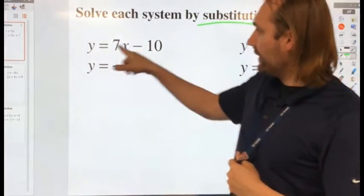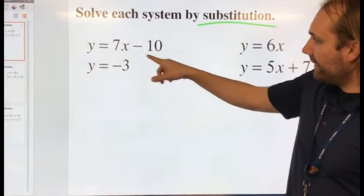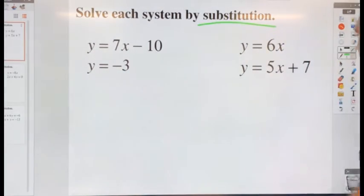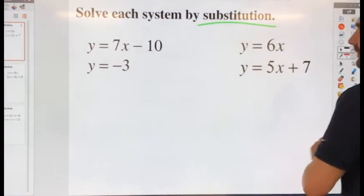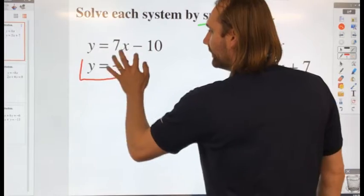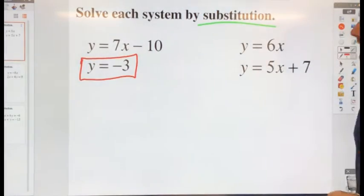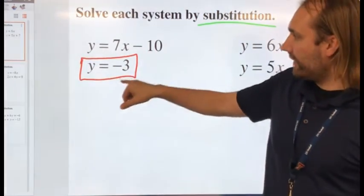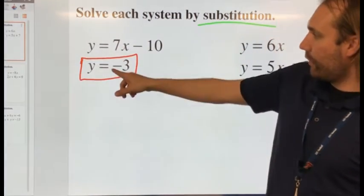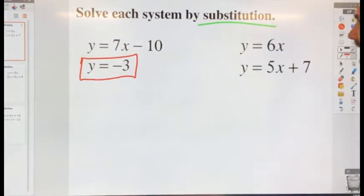So I have two equations and two variables: y equals 7x minus 10 and y equals negative 3. Well, how about that? It already gave me one of my solutions. I know y equals negative 3. My goal is to find my value for x and y so that when I plug it in, it works for both of these. I have my y, I just need now to find my x.